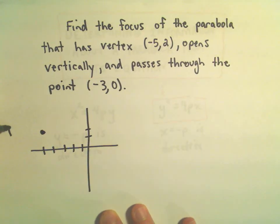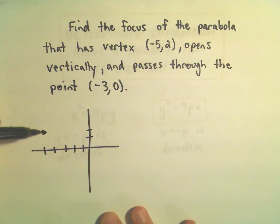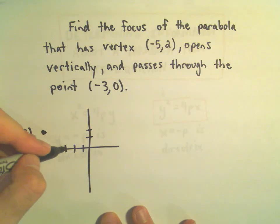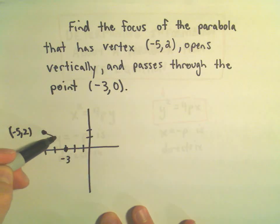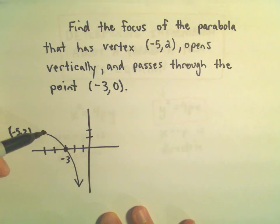You don't have to draw the picture, but to me it definitely helps. It opens vertically, so that means it's going to either open up or down. It passes through the point (-3, 0), so to me that's going to tell me that it's opening downwards.